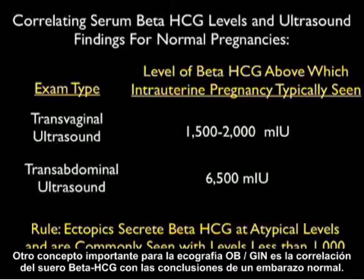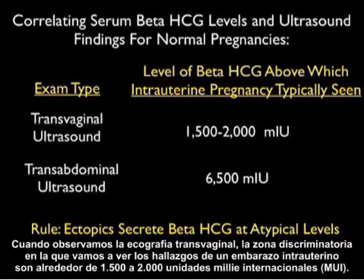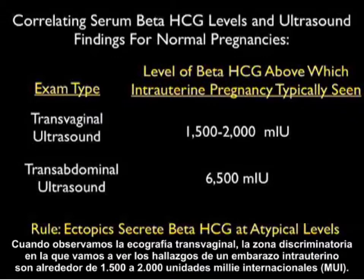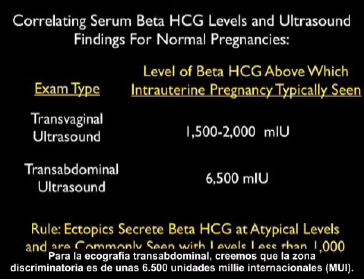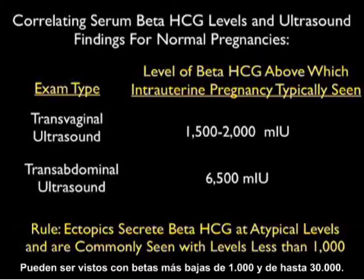Another important concept for OBGYN sonography is the correlation of serum beta HCG to the findings of a normal pregnancy. For transvaginal sonography, the discriminatory zone at which we will see findings of an intrauterine pregnancy is about 1,500 to 2,000 milli-international units. For transabdominal sonography, the discriminatory zone is about 6,500 milli-international units. This rule does not apply to ectopic pregnancies, which secrete beta HCG at atypical levels — they can be seen with betas lower than 1,000 and as high as 30,000.